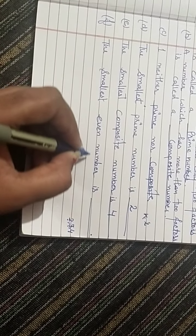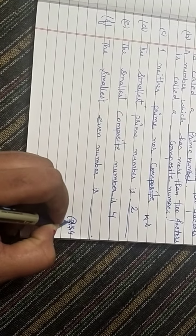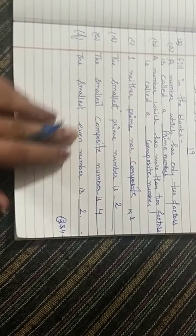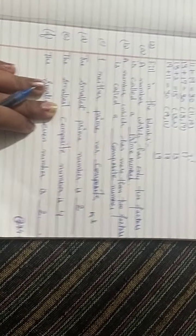Next is the smallest even number. Smallest even number is 2. Students, this exercise is complete.